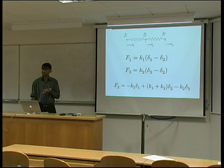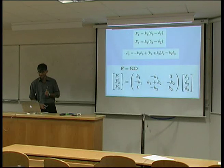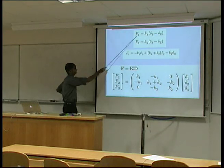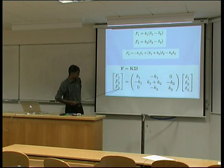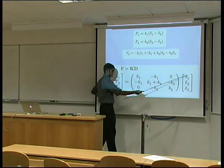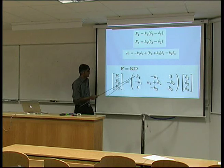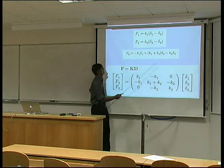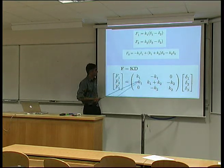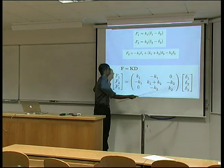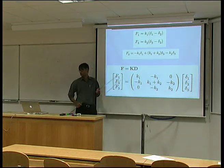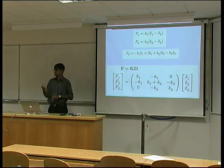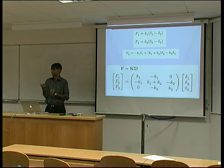I can represent this set of three equations using a three-by-three matrix. I've got the three equations for F1, F3, and F2, with the forces as a single column matrix and the displacements as a single column matrix. If I multiply this row by this column I get each equation. So that's now the stiffness matrix for the two elements together.